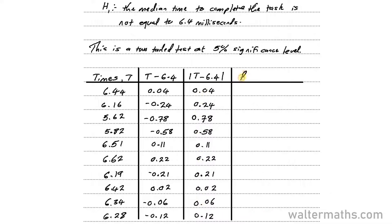So next I'm going to rank these values, starting with the smallest. The smallest value here is 0.02, so I'll give it a rank of 1. Then followed by 0.04, so I'll give it a rank of 2. Then followed by 0.06, I'll give it a rank of 3. Then 0.11, that's rank 4. Then 0.12, that's rank 5. Then the next one should be 0.21, so that's rank 6. 0.22 is rank 7. 0.24 should be rank 8. 0.58, rank 9. 0.78, rank 10. So I have ranked these absolute values.